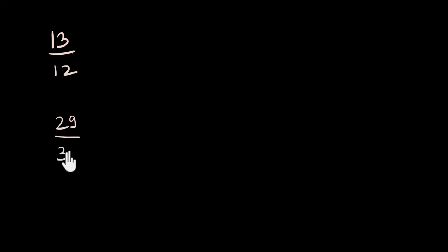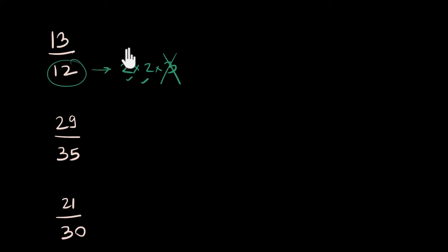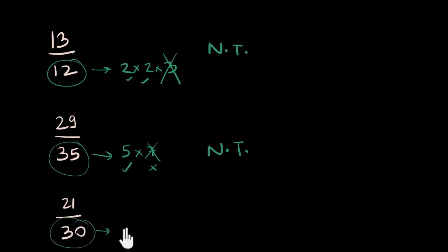Let's try a few problems without a calculator: 13 by 12, 29 by 35, and 21 by 30. For 13 by 12: 12 factors as 2 times 2 times 3 — the 2s are fine but the 3 is a problem, so this gives a non-terminating decimal. For 29 by 35: 35 is 5 times 7 — the 5 is fine but 7 is a problem, so non-terminating. For 21 by 30: 30 is 2 times 5 times 3 — the 3 is a problem, so also non-terminating.